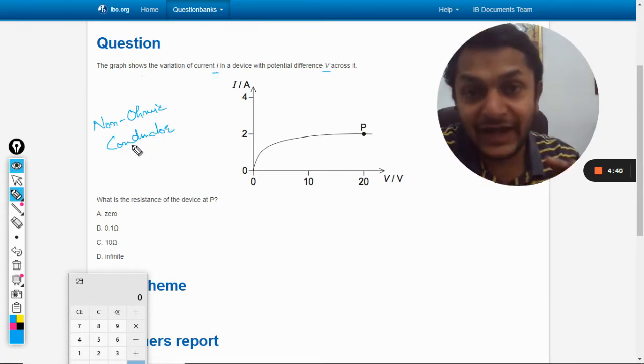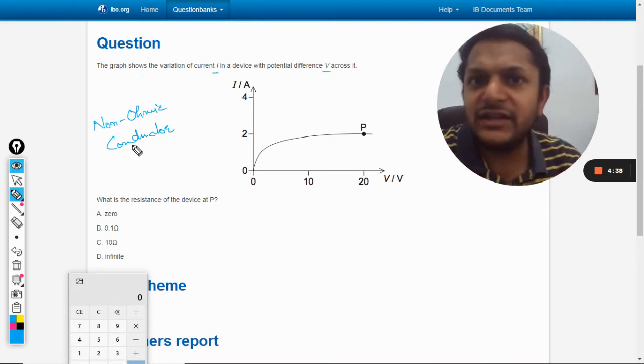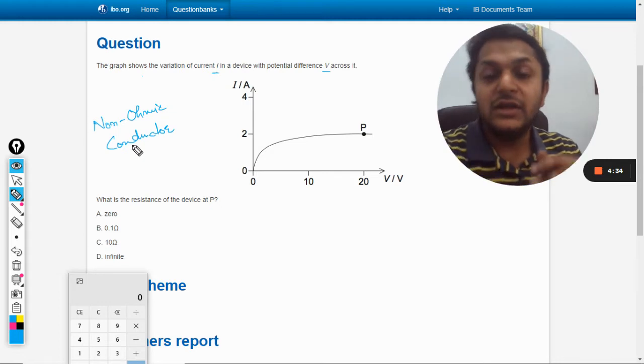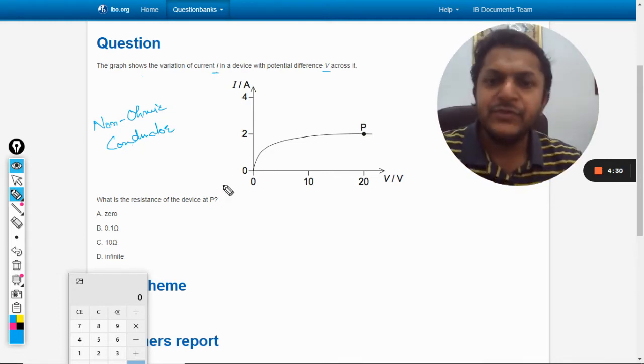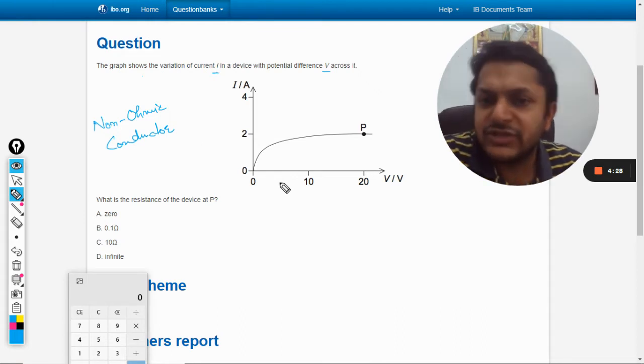They say but instantaneously Ohm's law is always valid. V is equal to IR is always valid, but the resistance is a variable quantity. So the answer will not come same every time.